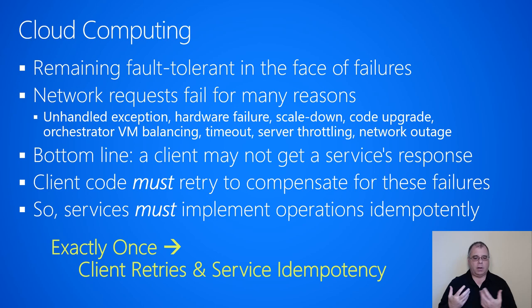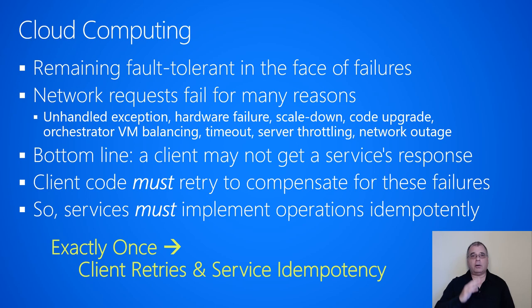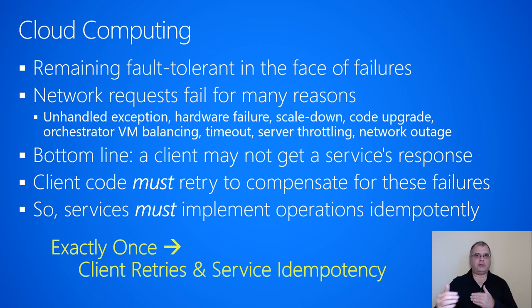So what is a client to do? Best practices say that client code must retry to compensate for these kinds of failures. The client makes a request, it maybe times out or gets a failure, and it will just retry the request again. But that means multiple requests are coming into the service, and we don't want the service to do the same thing twice. So the service code must implement its operations idempotently. To get exactly-once semantics in a cloud computing world where we're embracing failures, the client does retry operations against the service, and the service implements those operations in an idempotent way.